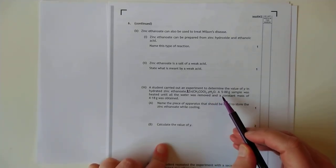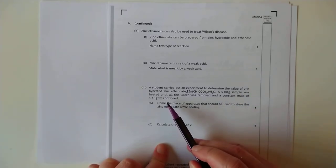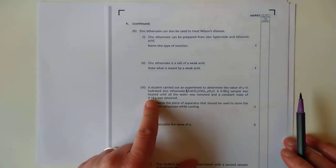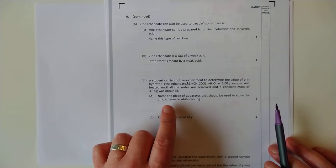So a 5 gram sample, if the printer will be quiet, please. Thank you. 5 gram sample was heated until all the water was removed and a constant mass of 4.18 was obtained. Harking back to my suggestion here, they want you to name the apparatus so you don't leave it on the bench.